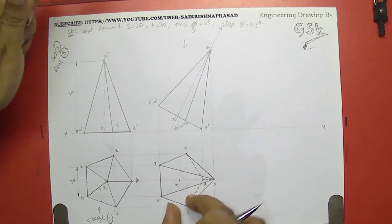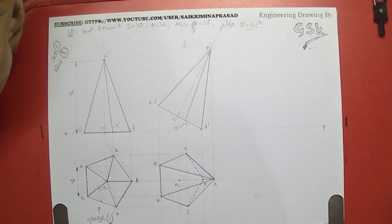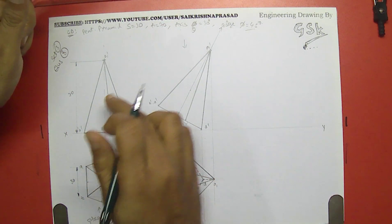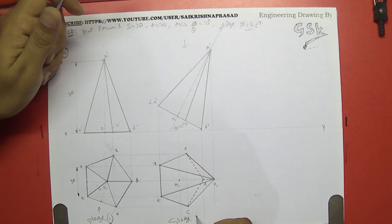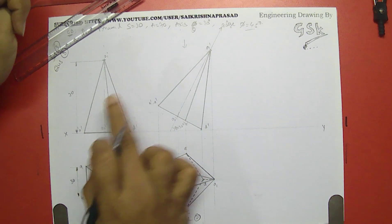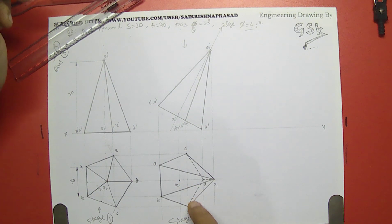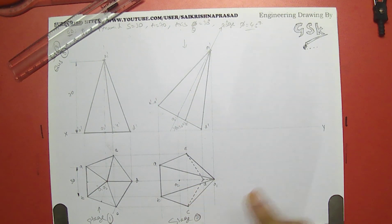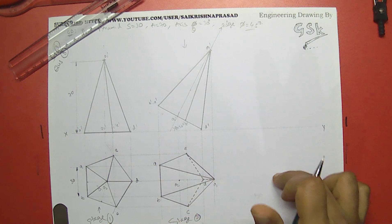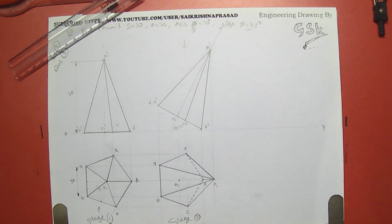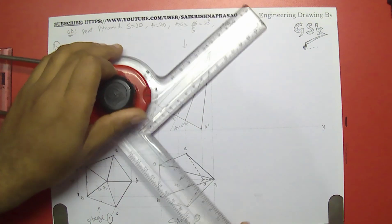Now reproduce this figure at 45 degrees — take the edge AB at 45 degrees and reproduce the same figure for stage 3. Stage 1 is the front view, stage 2 reproduces the top view. This final top view becomes the reference to draw the final front view. So stage 3 top view is the final top view projection, and using that reference you draw the final front view.